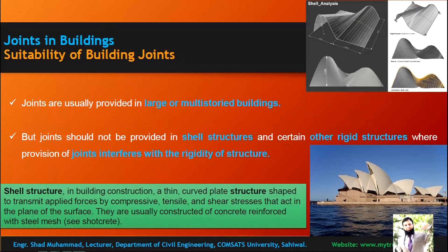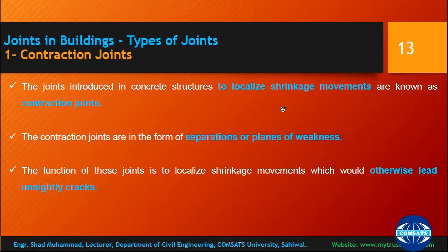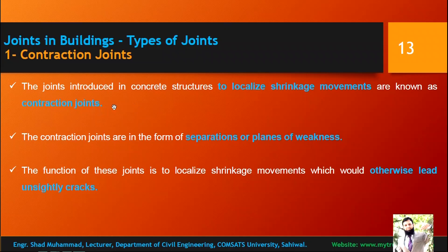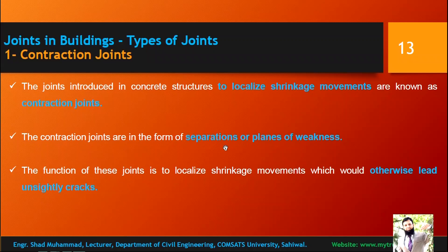The first type of joint is the contraction joint. Joints introduced in concrete structures to localize shrinkage movement are known as contraction joints. Due to improper or proper hydration, concrete shrinks and tries to contract itself; being joined with other members creates constant compressive stress. Instead of providing reinforcement against those stresses, contraction joints are provided. Without a contraction joint or additional reinforcement, cracks will form. Contraction joints are in the form of separations or planes of weakness.